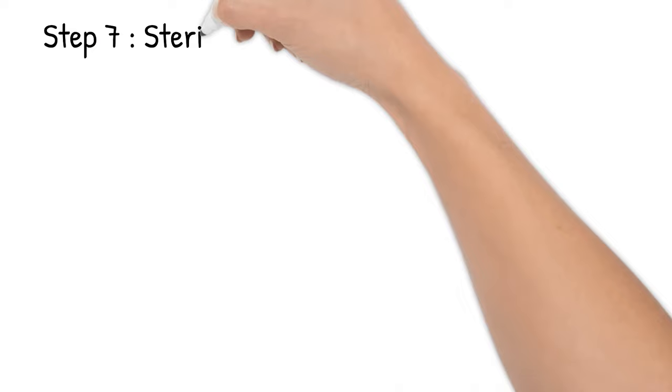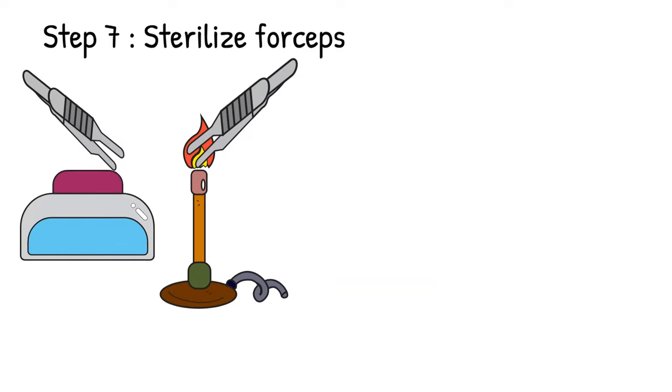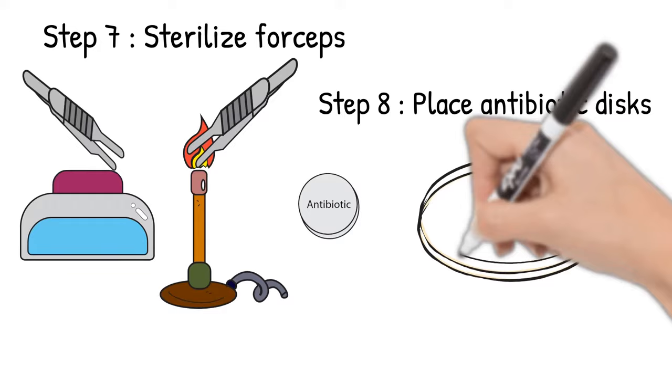Step 7: Sterilize forceps by dipping it in alcohol and pass it through flames. Step 8: Pick up an antibiotic disc and place it on the plate.